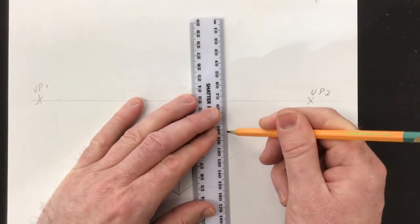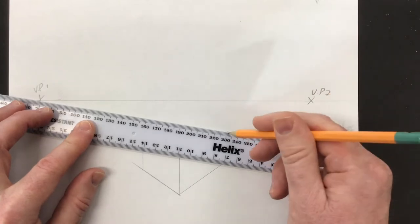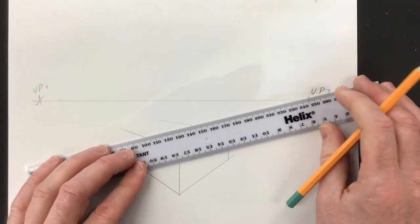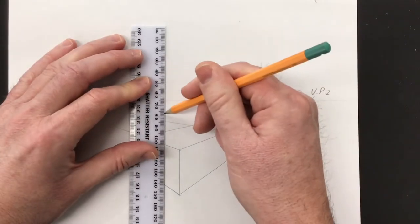So they put two of the verticals on, and then put the top. Remember, every time it's a diagonal line, it goes to one of the vanishing points.